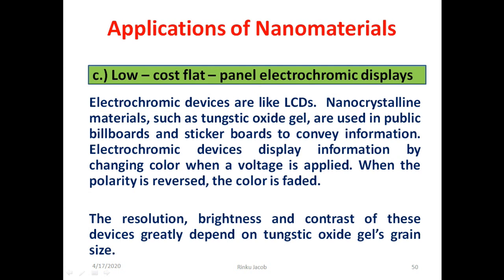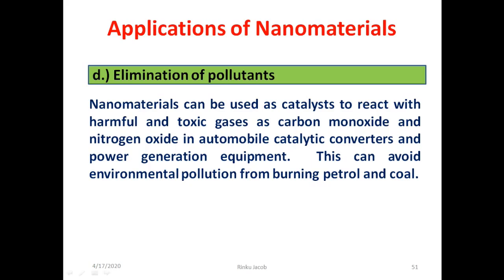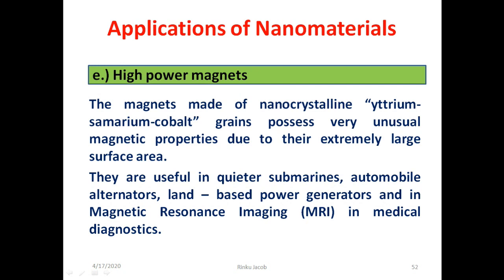Nanomaterials are used for low-cost flat panel electrochromic displays, similar to LCDs. Nanocrystalline materials such as tungstic oxide gel are used in public billboards to convey information by changing color when a voltage is applied; reversing polarity fades the color. The resolution, brightness, and contrast depend on the tungstic oxide gel grain size. Nanomaterials can also act as catalysts to react with harmful gases like carbon monoxide and nitrogen oxide in automobile catalytic converters and power generation equipment, avoiding environmental pollution. Magnets made of nanocrystalline yttrium samarium cobalt grains have unusual magnetic properties and are useful in quieter submarines, automobile alternators, land-based power generators, and MRI in medical diagnostics.